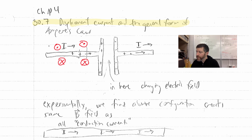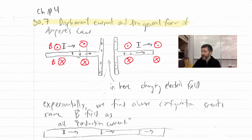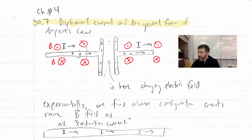That's the B field right there, and it's the same on this side — current going to the right, coming out of the page there, going into the page there. Now, inside the capacitor, there is no current. Current can't travel from one plate to the other; if it does, your capacitor is leaking. So here's the mystery: even though there's no current in there, there's still the exact same magnetic field inside the capacitor too.